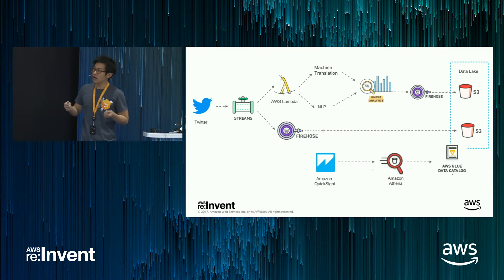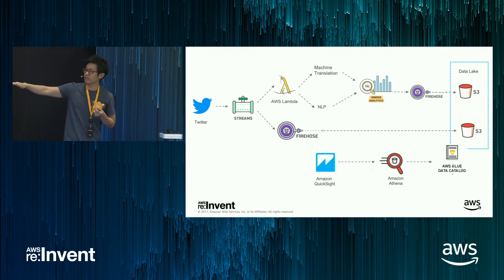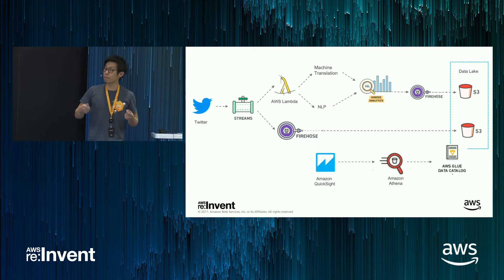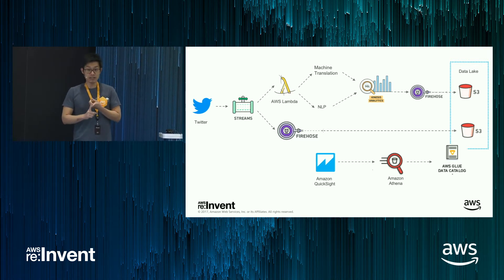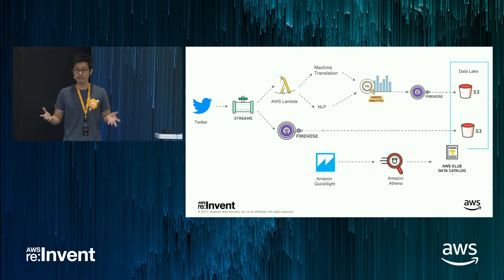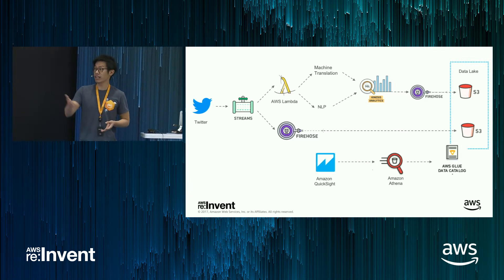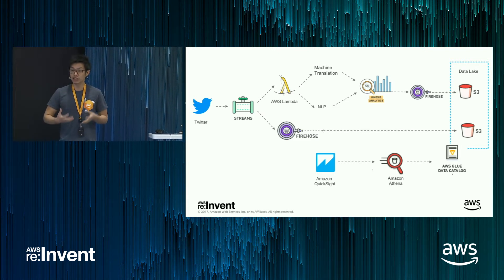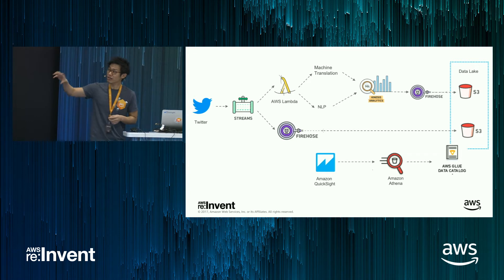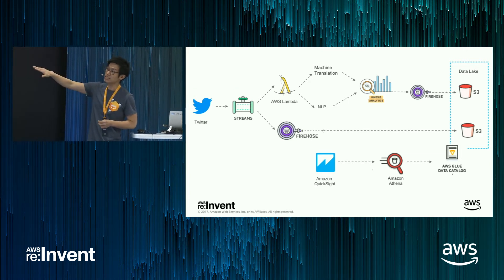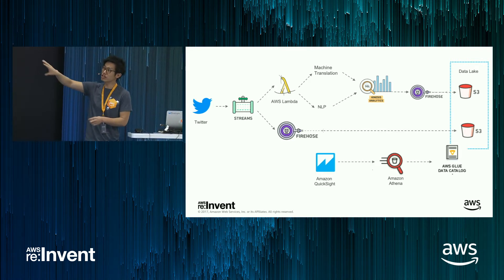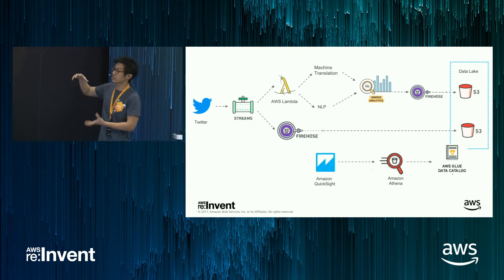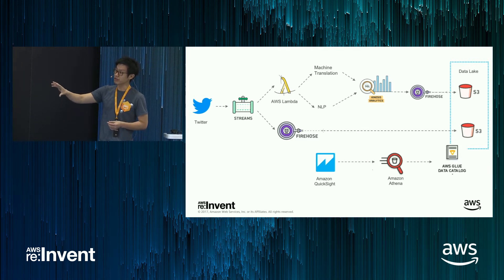At a very high level, this is what the backend looks like. It makes Twitter API calls, streams with Firehose, and puts it into S3. We're also doing something special — using AWS Lambda, which is the serverless compute, and then calling Amazon Translate and Amazon Comprehend, which are two new services launched at reInvent at Andy's keynote, to do machine learning translation, entity extraction, and sentiment analysis so you can get more insight out of the tweets.